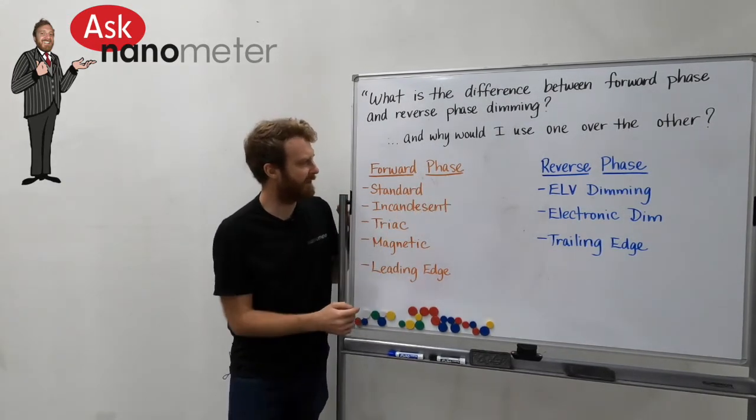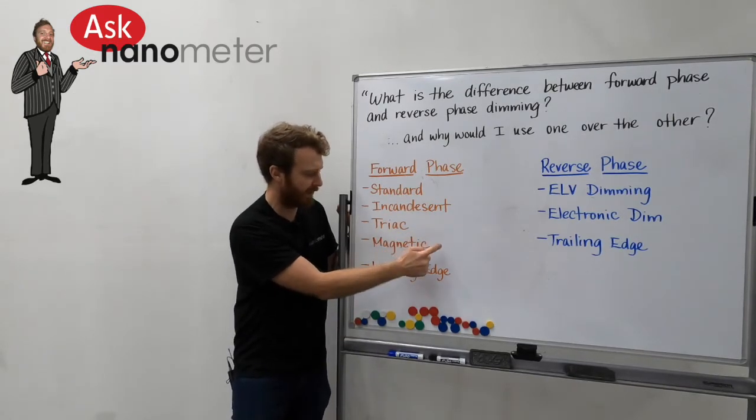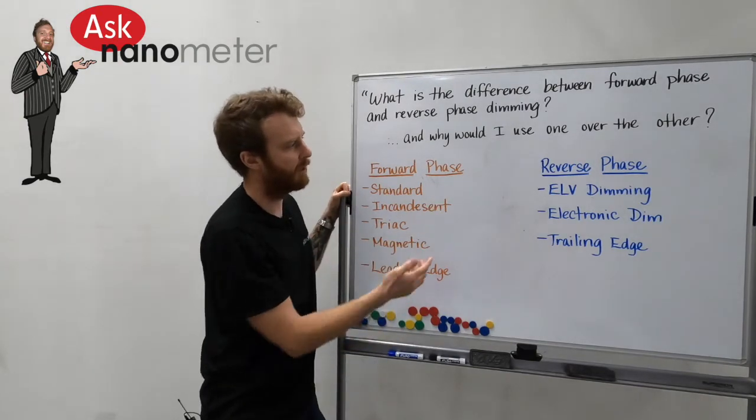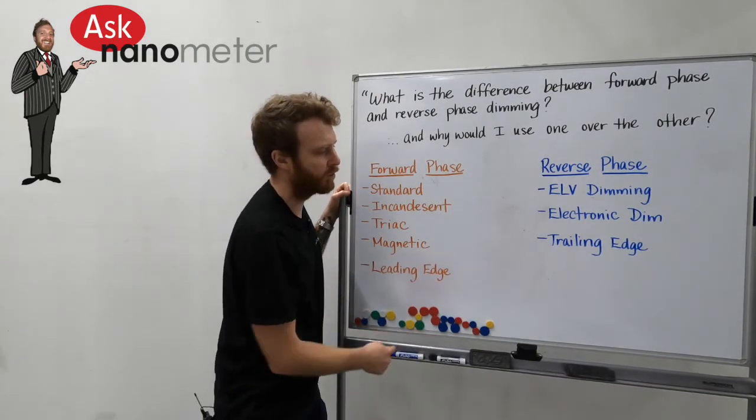Basically, forward phase can also be known as standard incandescent, triac, magnetic, and leading edge dimming, and reverse phase can often be called ELV, electronic, or trailing edge dimming.